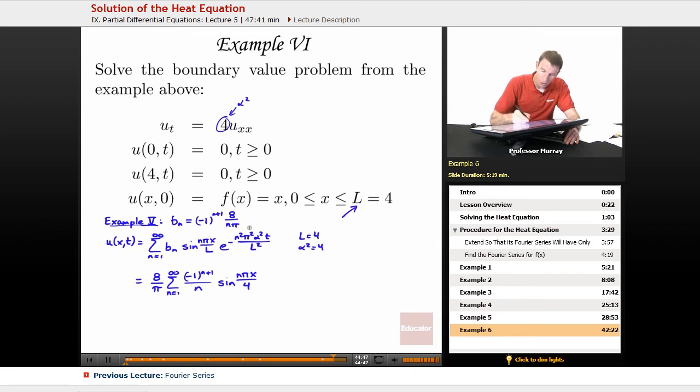Now I've got alpha squared is 4, l squared is 16, so I can simplify that a little bit to 1 over 4. E to the negative n squared pi squared. I'm going to combine my 4 and my 16 into the denominator with 4. And that's all I have.